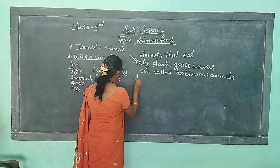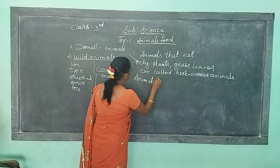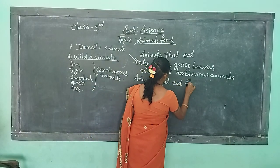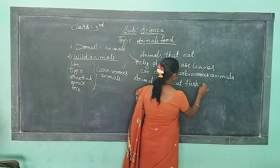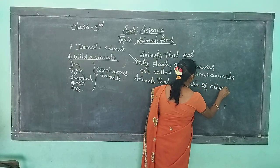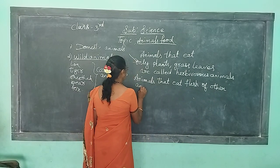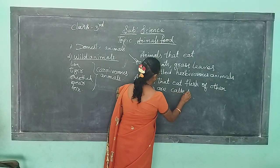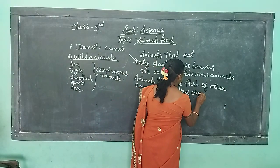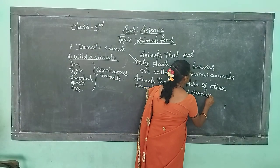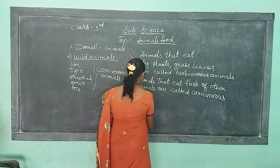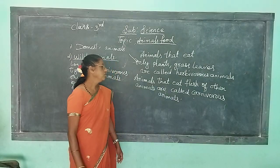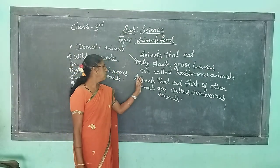Animals that eat flesh of other animals are called carnivorous animals. For example, lion, tiger, cheetah, bear, and fox — they will kill other small animals and eat their flesh.